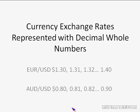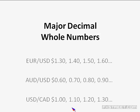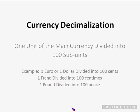In currency exchange rates, we represent major whole numbers using decimal whole numbers. For the euro-dollar exchange rate, examples would be $1.30, $1.31, $1.32, and so forth. For the Aussie dollar: 0.80, 0.81, 0.82, 0.90. The major decimal whole numbers would be $1.30, $1.40, $1.50, $1.60 for the euro-dollar, or 0.60, 0.70, 0.80, 0.90, then parity at 1-for-1 — a very important price level — for the Aussie dollar.